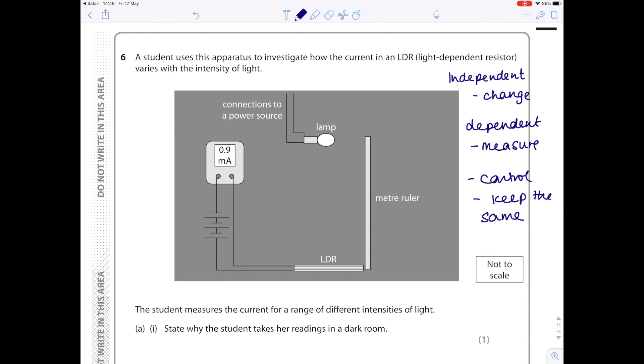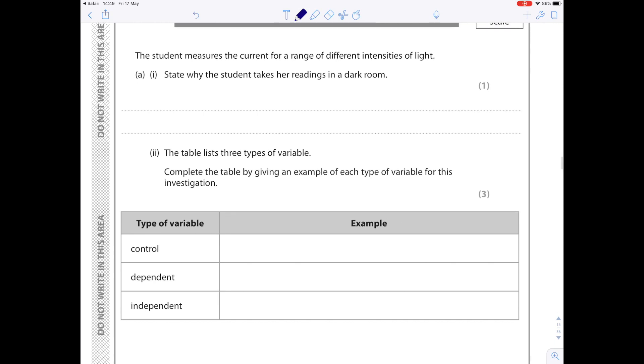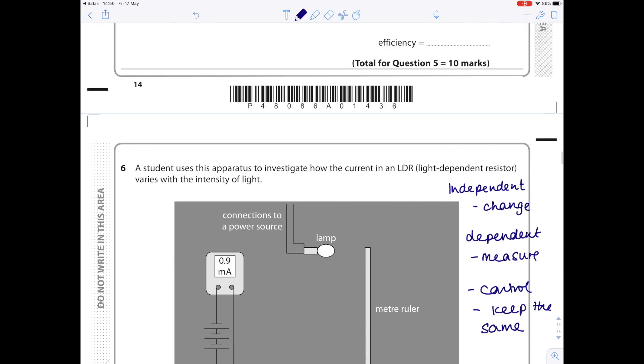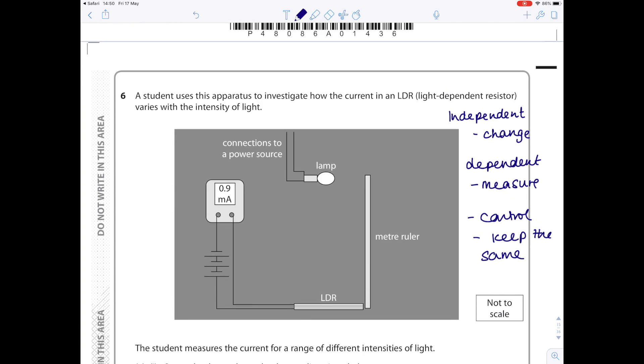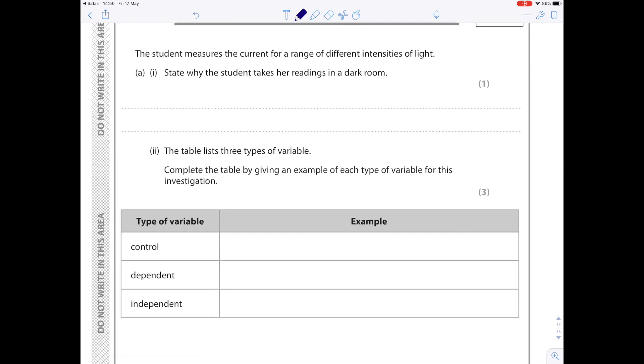Just to take this example: question 6, a student uses this apparatus to investigate how the current in an LDR, light dependent resistor, varies with the intensity of light. I'm going to ignore the first question and go straight to the variable. The table lists three types of variable. Complete the table by giving an example of each type of variable for this investigation. So a control variable: what do we need to keep the same in this experiment? Well, the power rating of the lamp is crucial that we keep the same.